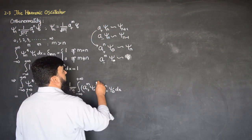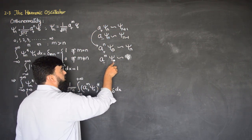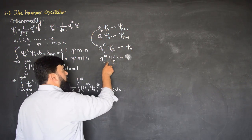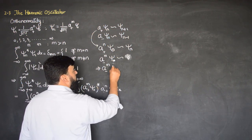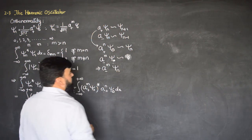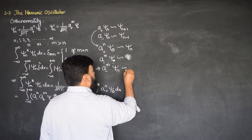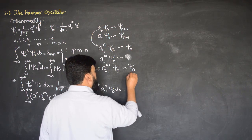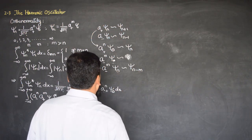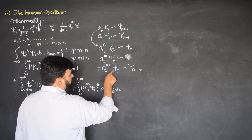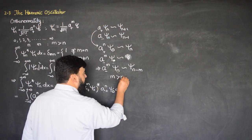This gives us the key idea: a- operating on ψn where ψn is the ground state gives zero. The raising operator increases the state and the lowering operator decreases it. When a- to the power m operates on ψn, since m is greater than n, it will lower the state past the ground state, giving zero. This confirms orthogonality when m does not equal n.